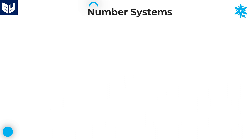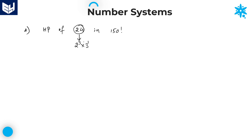Second problem: find the highest power of 24 in 150 factorial. 24 is not a prime number — it is a composite number. We convert it into prime factors: 24 equals 2 cubed into 3 power 1. Here the power values are not equal, so you have to divide 150 with both the numbers.